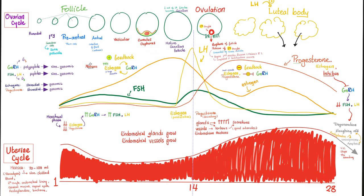In the first half of the cycle, estrogen will boost the production of GnRH, which increases FSH and LH. In the second half of the cycle, it switches from positive feedback to negative feedback — probably because of the dose. Here, estrogen is very high so it acts as positive feedback, but at lower amounts it's negative feedback on GnRH, although the exact reason is poorly understood.